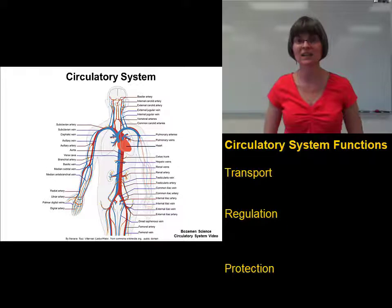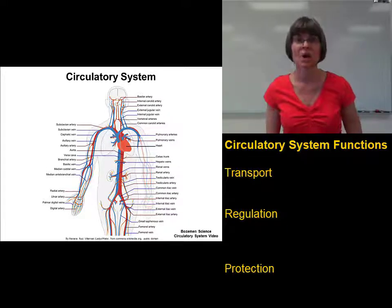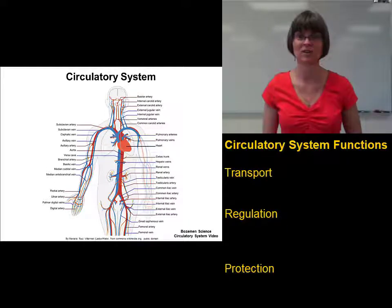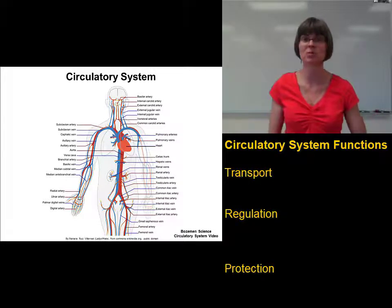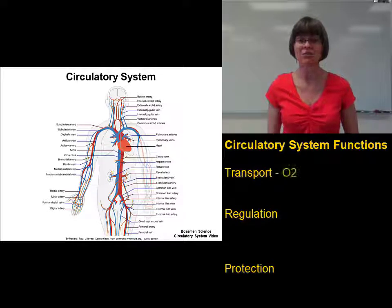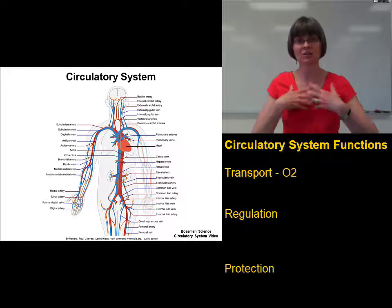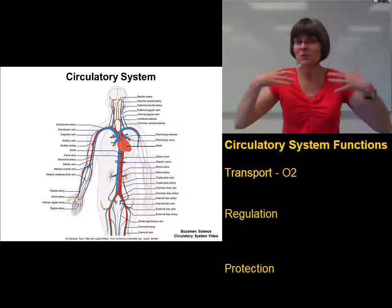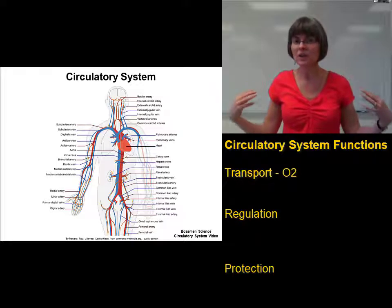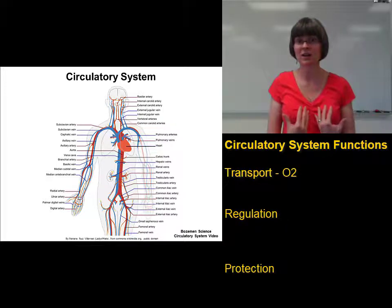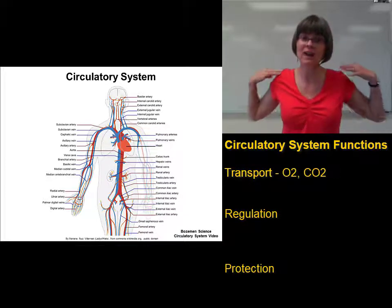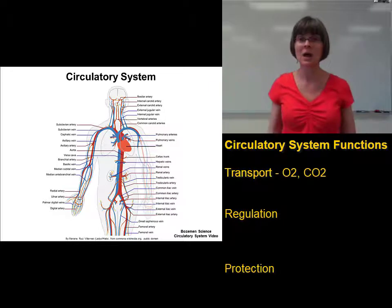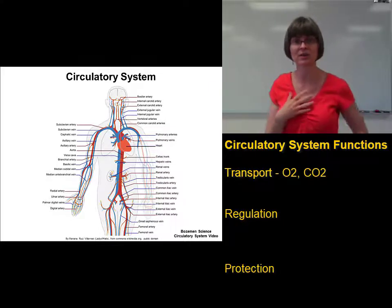When it comes to transportation, the first thing most people think of is that the circulatory system transports oxygen, and that's true. It carries oxygen from your lungs out to the rest of your body. But anywhere you carry oxygen, you're going to make carbon dioxide, so the circulatory system is also important for carrying carbon dioxide from all the cells of your body back to your lungs so you can breathe it out.